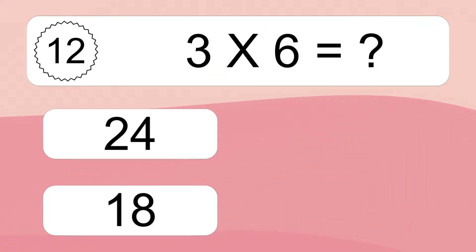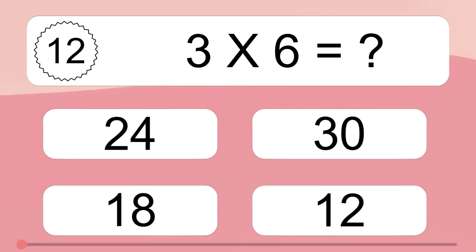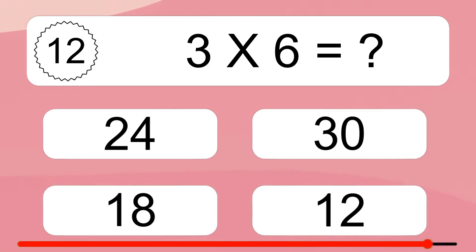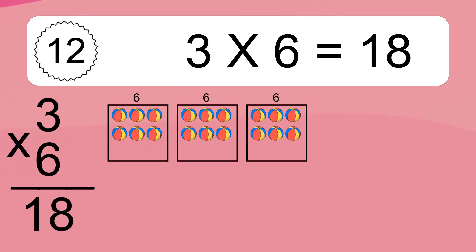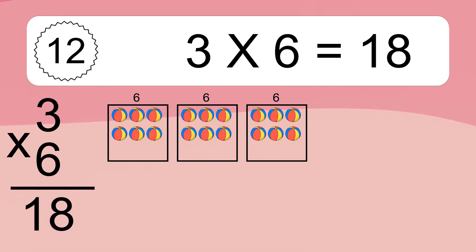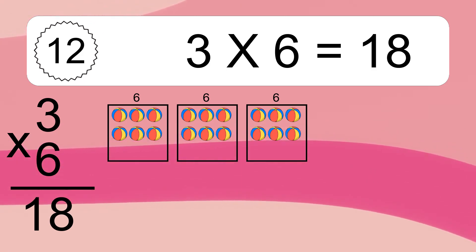3 times 6 equals what? 3 times 6 equals 18. We have 3 boxes and each box has 6 colorful balls inside. If you count all the balls in all the boxes together, you will have 3 times 6 balls. This equals 18 balls.